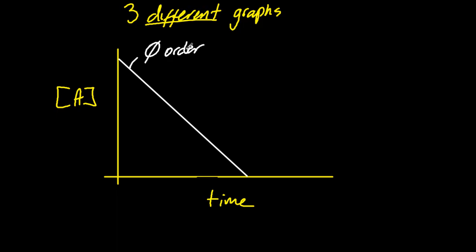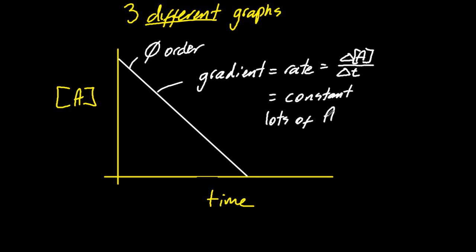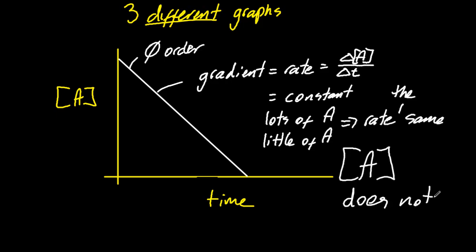You can see that the concentration of A changes regularly with time. It doesn't really seem to be affecting the rate at all. At high A and at low concentration of A, the rate is the same. And the rate is the gradient, change of A over the change of T. So it's a constant gradient. Lots of A, a little bit of A, the rate's the same. So A has nothing to do with the rate. It's the same rate, whether there's lots of A or a little bit of A. So that's A raised to the power of zero, a zero order.